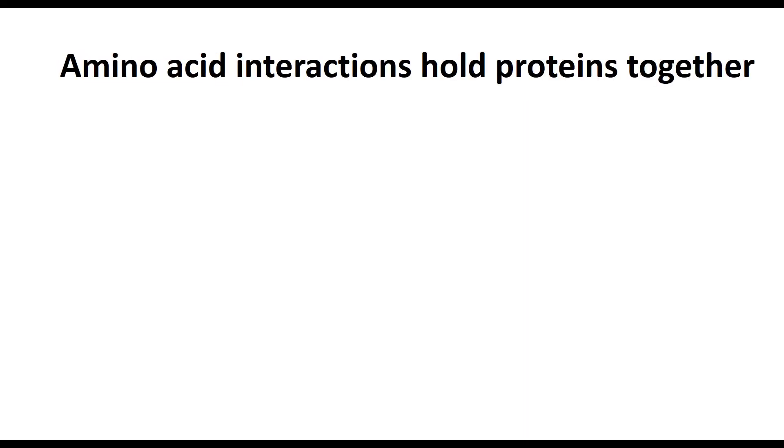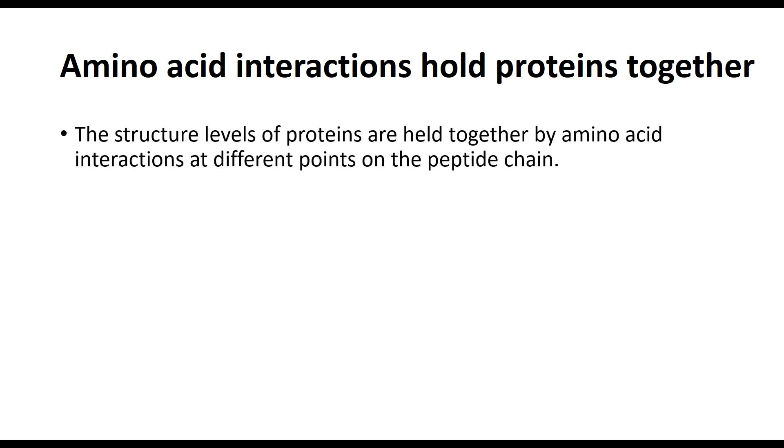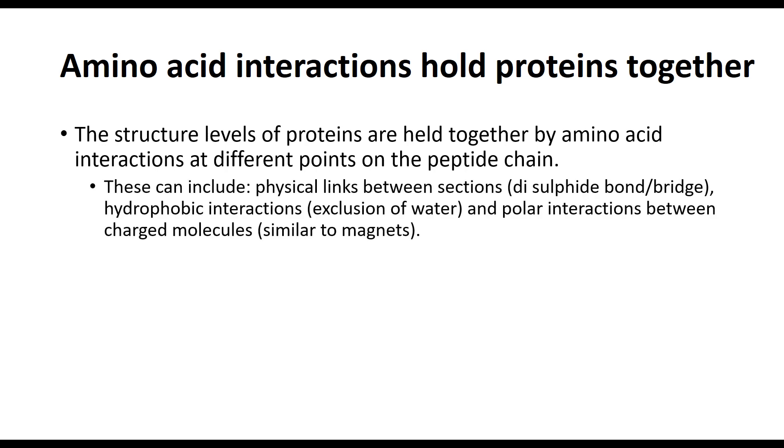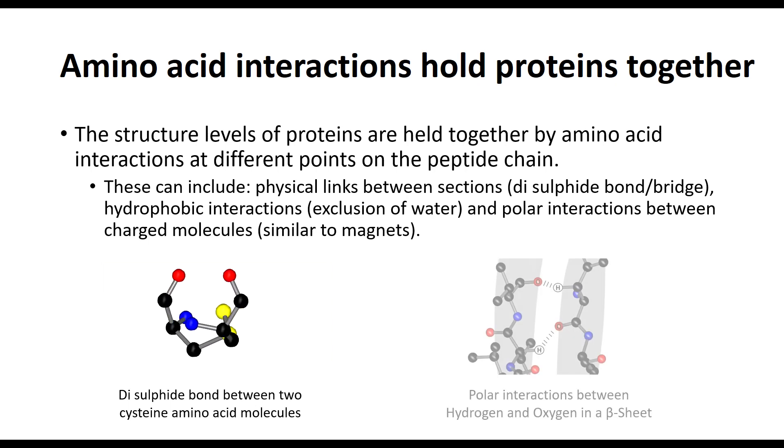So how are these structures held together? Well, the interactions between the amino acids that I mentioned before is a big part of how they're held together. They can range from physical links between the amino acids in the form of disulfide bonds between two sulfur-containing amino acids, such as cysteine shown here, to polar interactions, as used here in the beta-sheet secondary structure, where small amounts of electronic charge on particular atoms attract each other in a similar way to a pair of magnets.